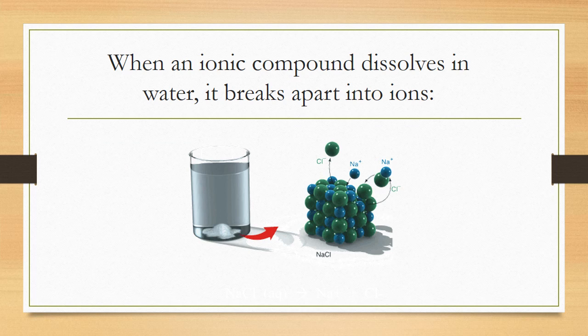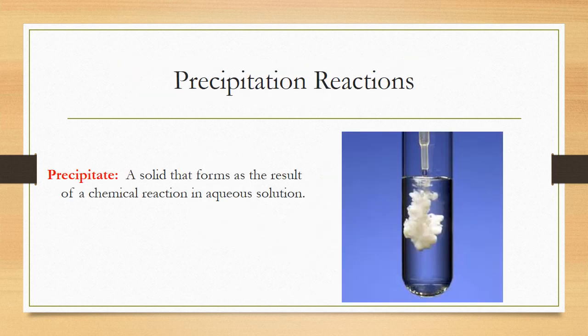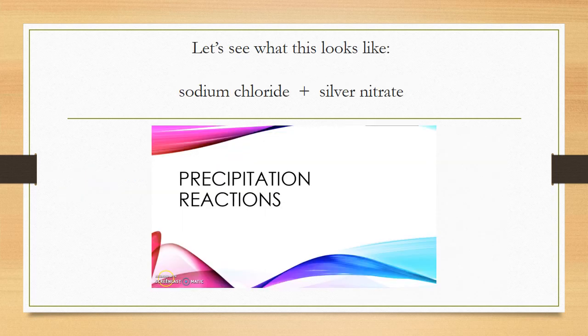We'll also look at the salts that form when acids and alkalis react. When an ionic compound dissolves in water, it usually breaks apart into ions. However, sometimes you get a precipitation reaction because the bonds between different ions are stronger than those between the ions and water. An example is the reaction between sodium chloride (table salt) and silver nitrate.